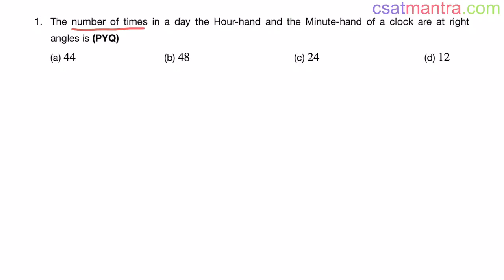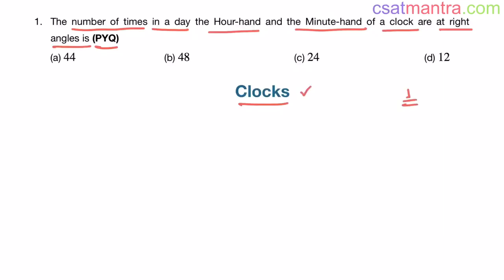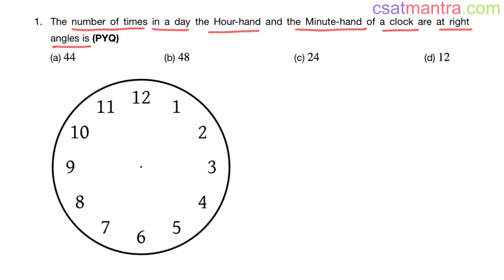The number of times in a day the hour hand and the minute hand of a clock are at right angles is — this is a previous year question from the clock chapter. Every year you can expect at least one question based on clocks. Questions are very easy in nature; a 15-minute lecture is enough to solve any clock question. Now most of you would be thinking 48 is the answer — no, 48 is not our answer. Let's solve it.